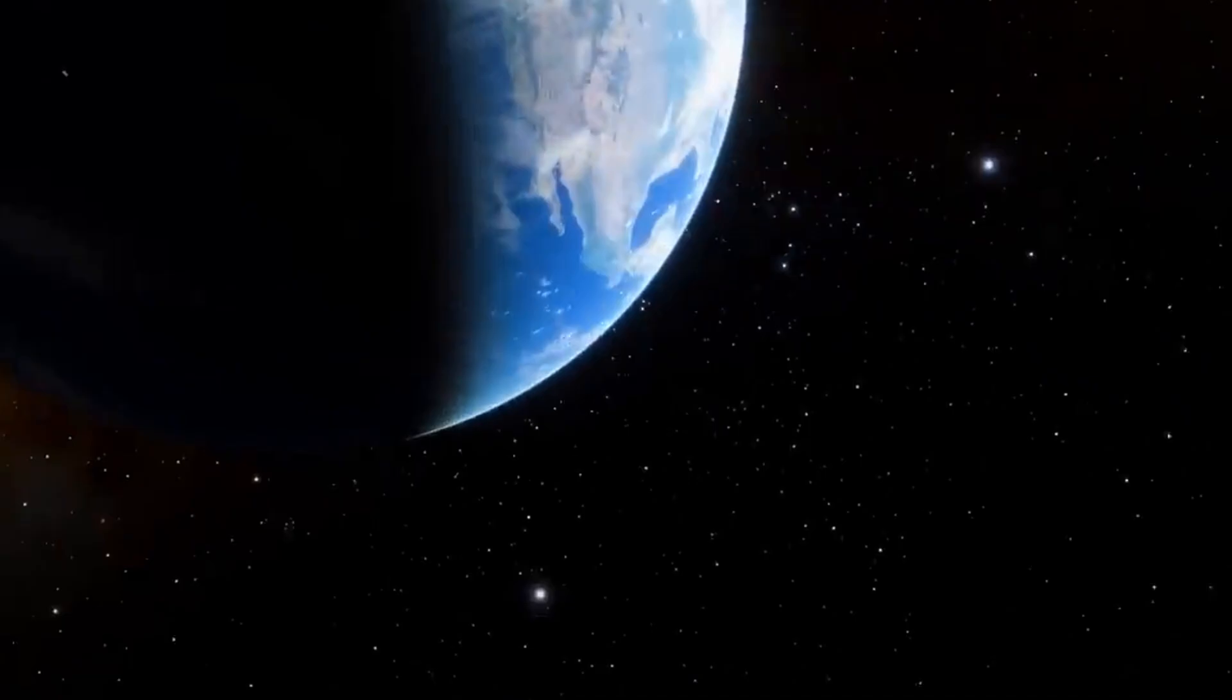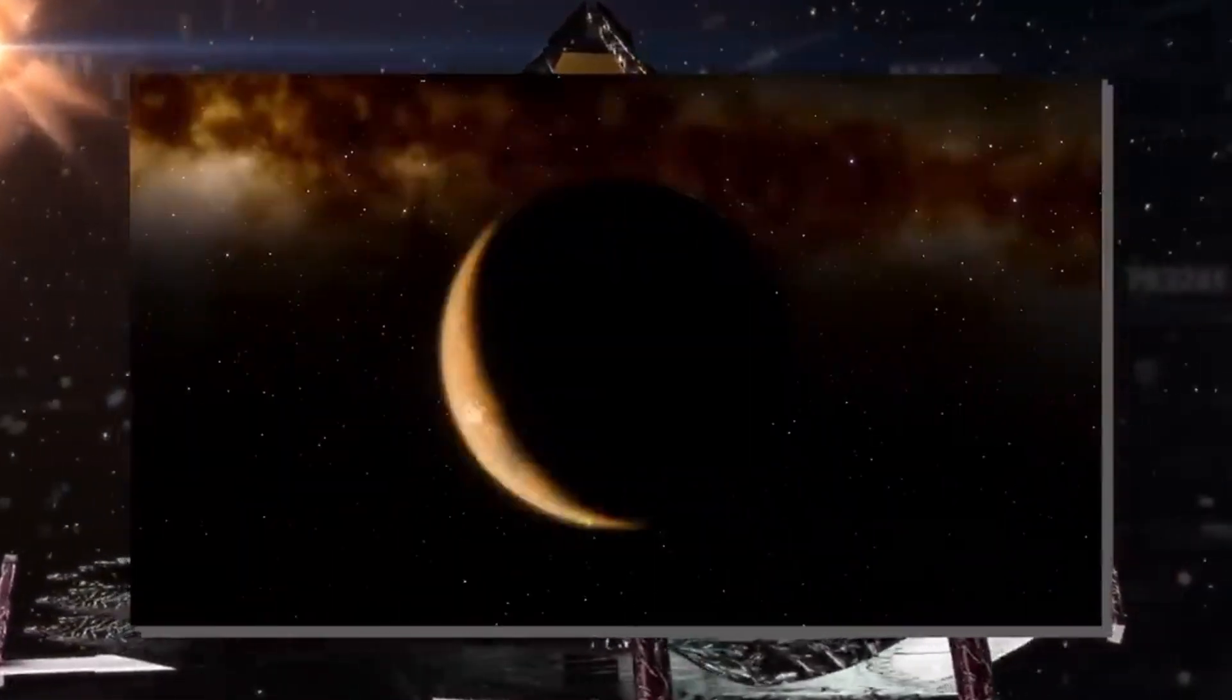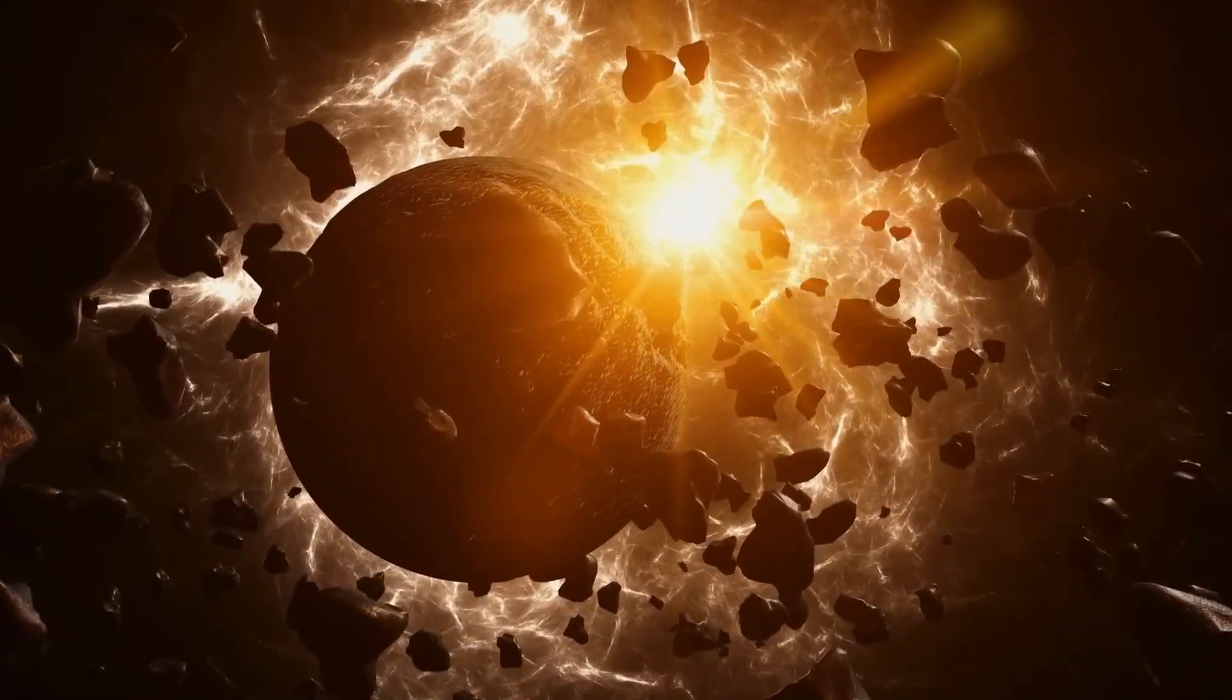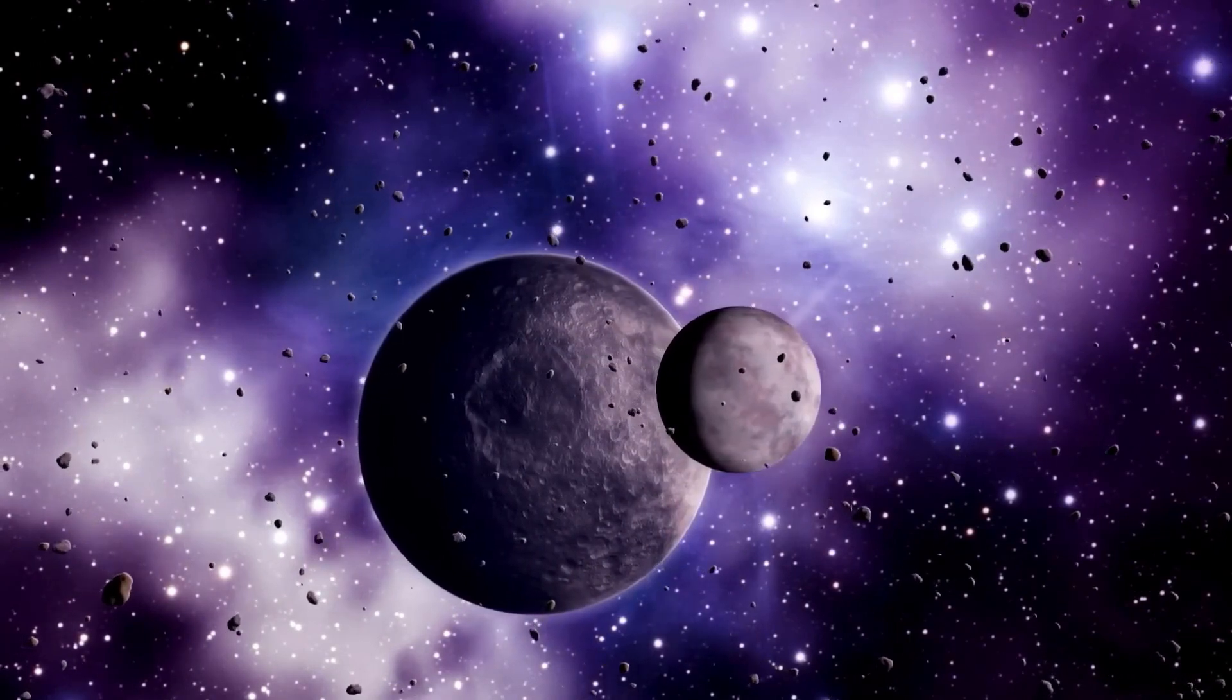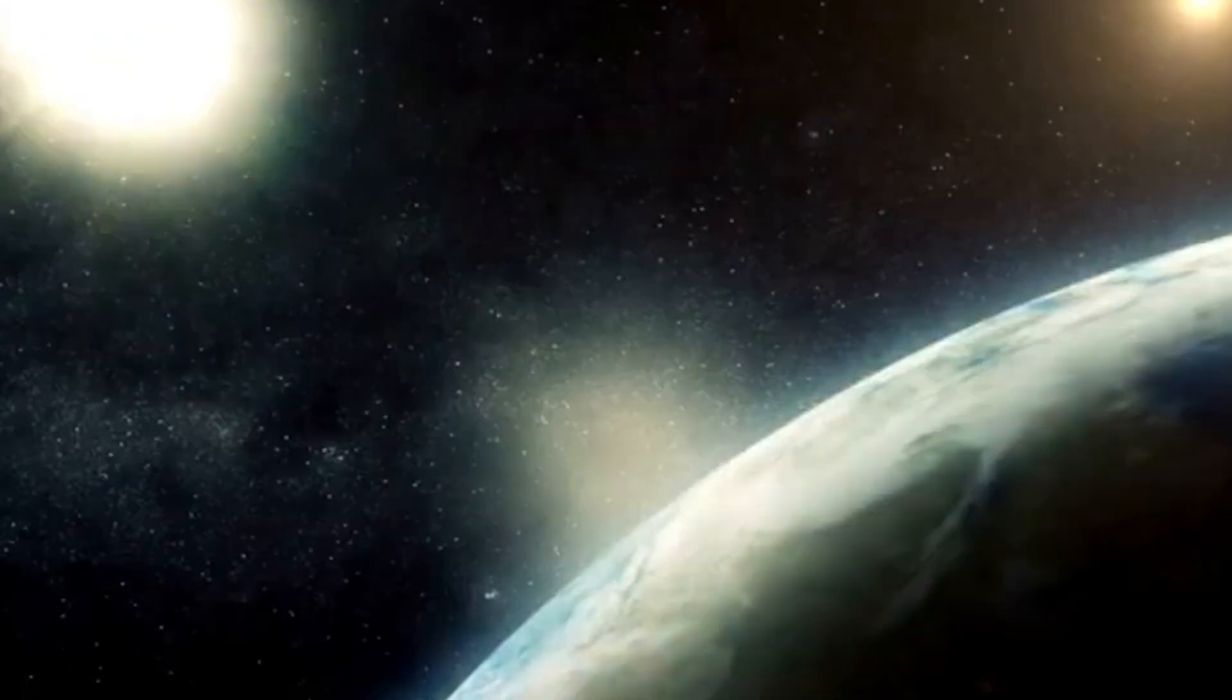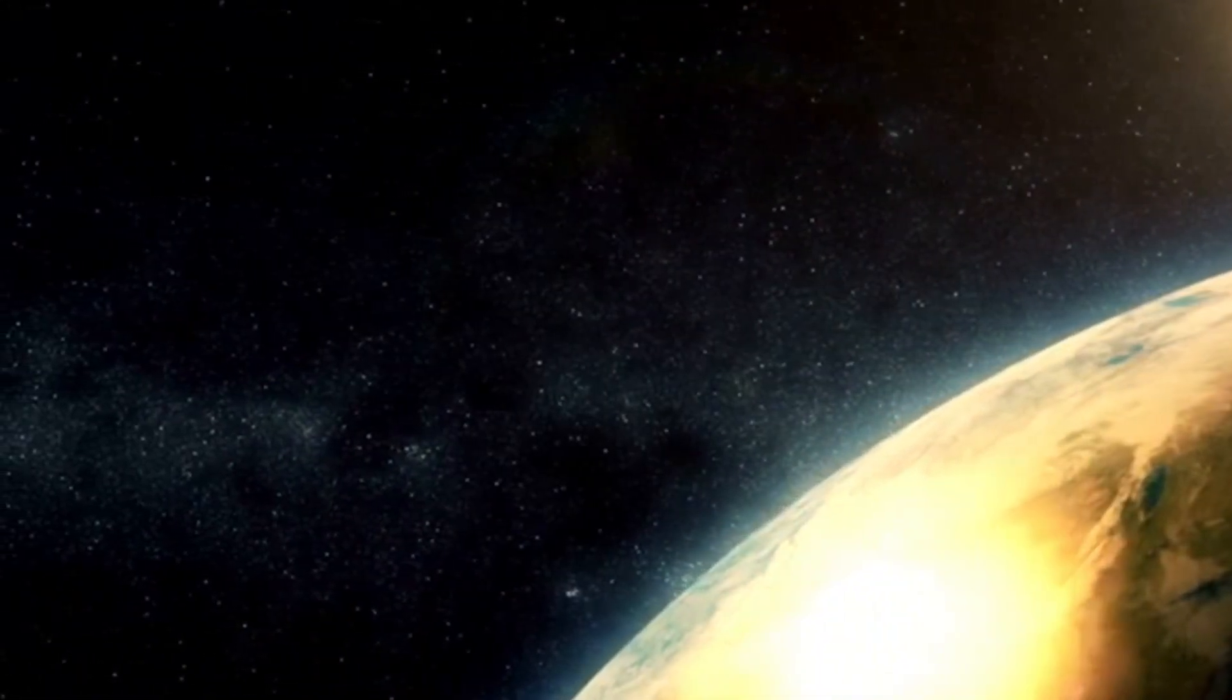First, you may ask, what even is Proxima b? Proxima Centauri b, or simply Proxima b, is sometimes referred to as Alpha Centauri b. It is a super-Earth and it orbits an M-type star. Super-Earths are a category of planets that are more massive than Earth but lighter than ice giants like Neptune and Uranus. They are quite unique. They can be made of gas, rock, or even a combination of both, and their sizes can range from twice the size of Earth to a few times its mass.